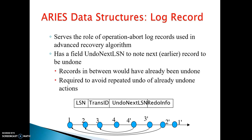The CLR has an Undo Next LSN field to note the next record to be undone. Records in between would have already been undone, which is required to avoid repeating already-undone actions. In this case, we maintain LSN, transaction ID, Undo Next LSN, and redo information.